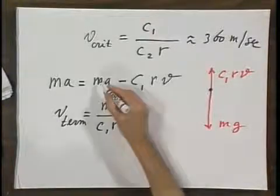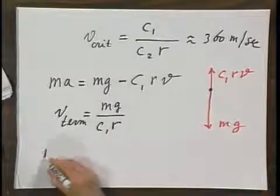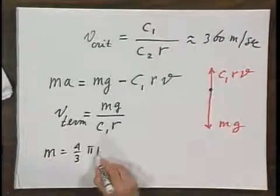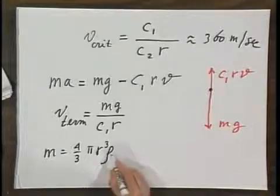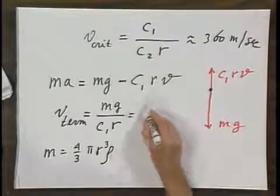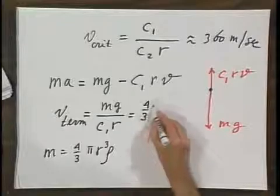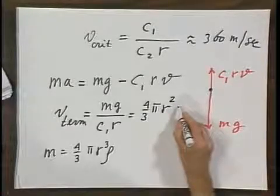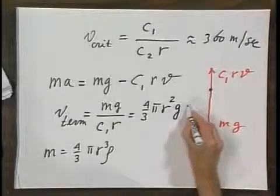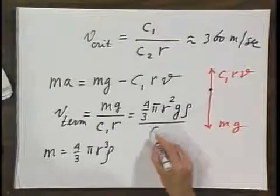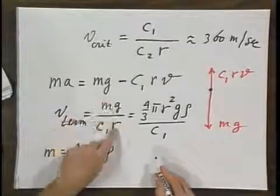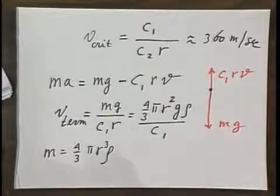And if you want to substitute for the mass, 4/3 π R³ times the density of the object, then you can also write this as 4/3 π R² times g times ρ divided by C₁. We have an R³ upstairs and an R downstairs, so we get an R² here.